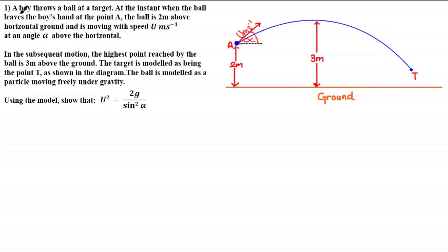So let's have a look at this question. A boy throws a ball at a target. At the instant when the ball leaves the boy's hand at point A, the ball is two meters above horizontal ground and is moving with speed u meters per second at an angle alpha above the horizontal. In the subsequent motion, the highest point reached by the ball is three meters above the ground. The target is modeled as being the point T as shown in the diagram, and the ball is modeled as a particle moving freely under gravity. Using the model, show that u squared is equal to 2g over sine squared alpha.